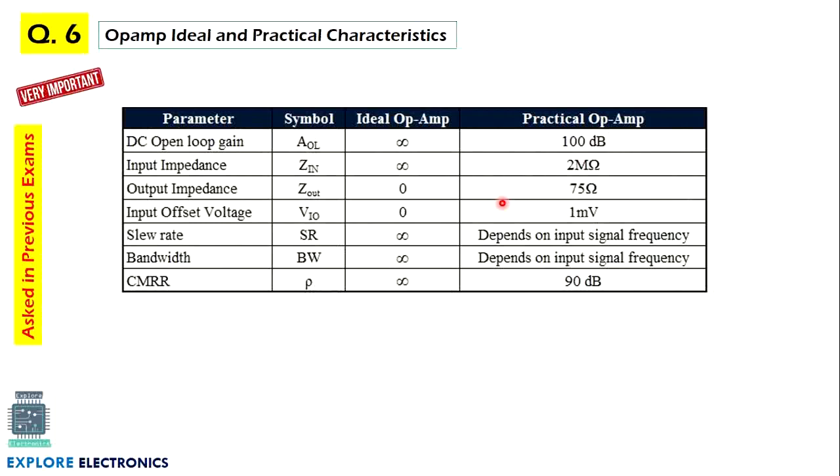Then in operational amplifier, ideal op-amp characteristics are very important. Ideal op-amp characteristics are asked many times in the previous exams, and practical values also we need to remember. If they asked to write the practical op-amp characteristics, we need to write these values. Otherwise, ideal op-amp characteristics are repeatedly asked in exam. We need to write one or two lines of explanation for what is DC open loop gain, why it is infinite, what is input impedance, why it is infinite, and so on. So this question may come in exam and it is very important.